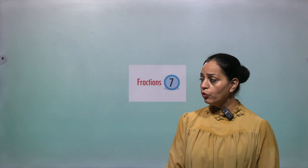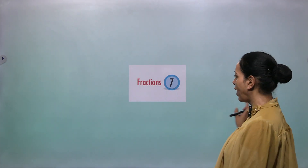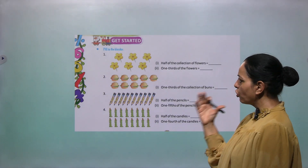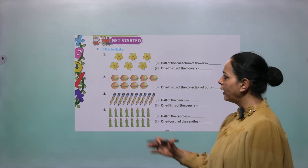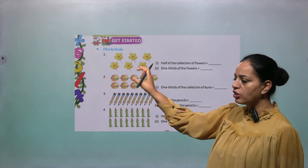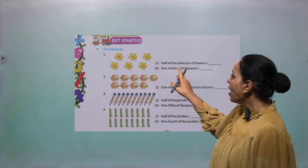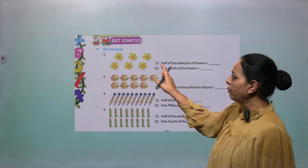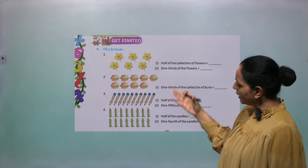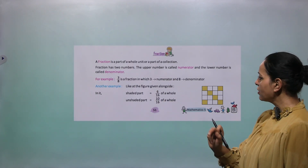Hello, this is your mentor Nitu. We are doing chapter 7, Fractions, of class 5. So let's see our beautiful picture over here — filling the blanks. Some flowers are given here. How many flowers? 6. Half of the collection of flowers means half of 6, which is 3. You can try it. It's very beautiful and interesting.